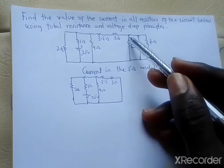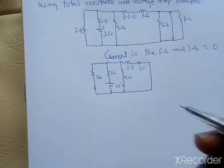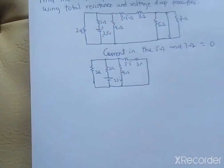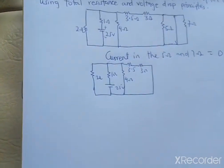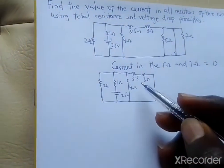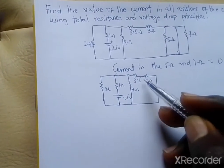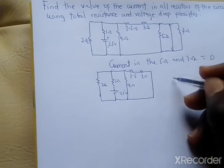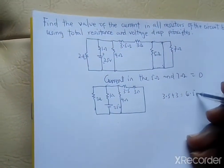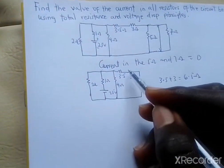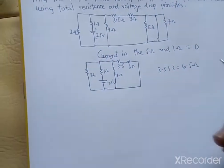Now let's find the total resistance of this effective circuit. The 3.5 ohm and 3 ohm resistors are in series because there is no node between them. Their series combination gives us 3.5 plus 3, which equals 6.5 ohms.